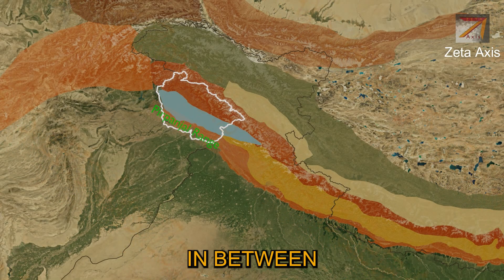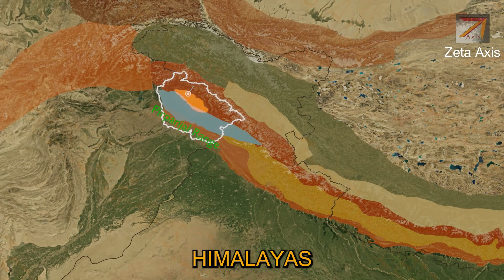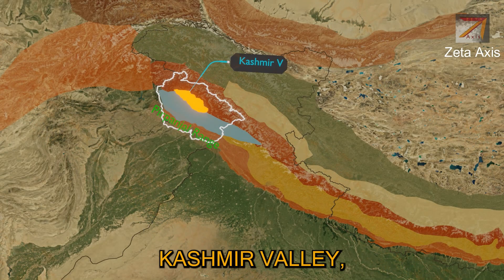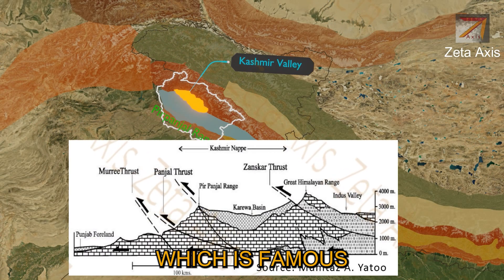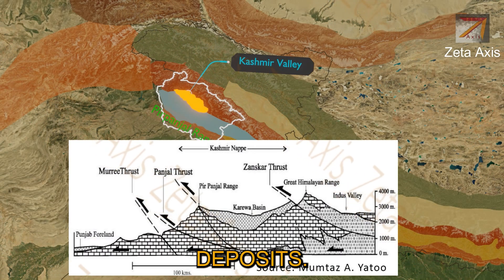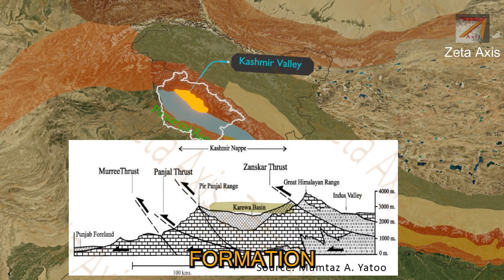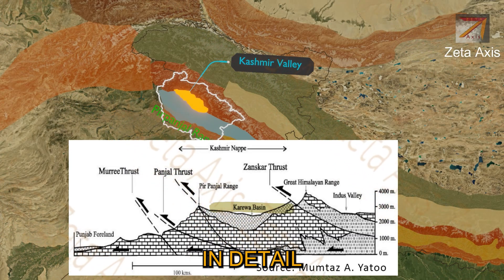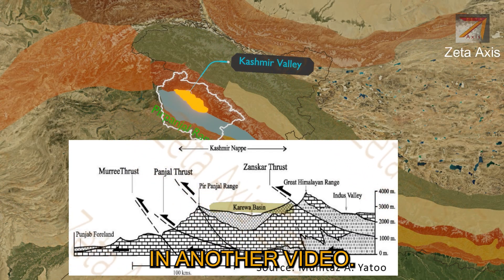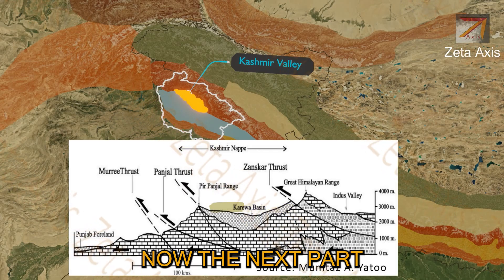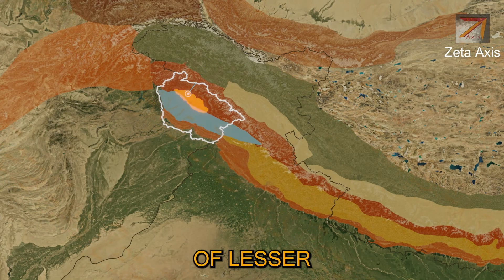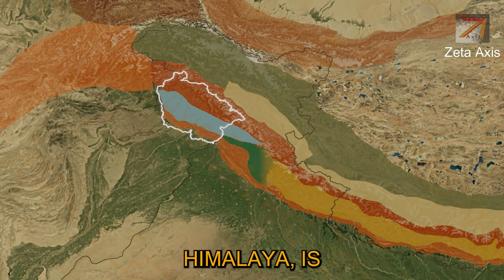Rohtang pass in the eastern Pirpanjal range also connects Manali and Lahaul. In between the Pirpanjal and Greater Himalayas is located the Kashmir valley, which is famous for Karewa deposits. We will discuss the Kashmir valley and Karewa formation in detail in another video.